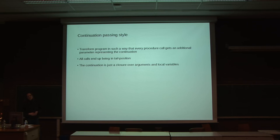Continuation passing style is a transformation, a source code or a program transformation, where every procedure call gets an additional argument that represents this continuation. You make the implicit continuation explicit and pass it on into every procedure call. This results in all calls being in tail position. They are the last thing a procedure does.